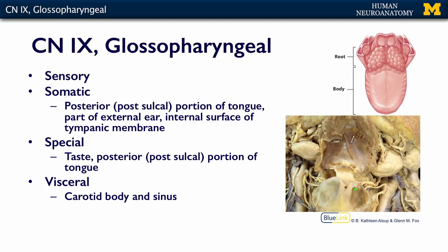When it comes to sensation, the glossopharyngeal is again complicated. The somatic innervation carried by the glossopharyngeal comes from the posterior or post-sulcal portion of the tongue. Remember that CN5 is general sensory for the front of the tongue, and CN9 is general sensory for the posterior part. It also innervates part of the external ear and the internal surface of the tympanic membrane — so earache from fluid pressure in the ear is transmitted by the glossopharyngeal nerve.